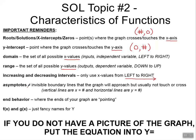Asymptotes — these are invisible boundary lines that the graph will approach but usually not touch or cross. If we have vertical asymptotes, those would be x equals a number, and if we have horizontal asymptotes, those will be y equals a number.